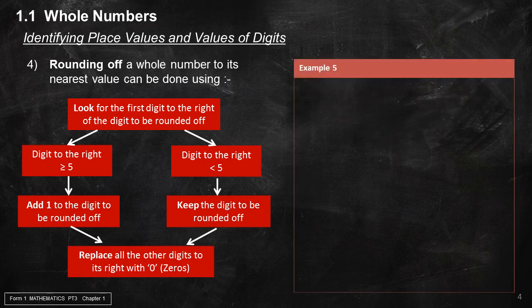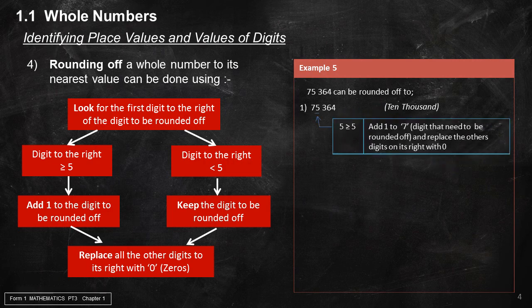Example 5 — rounding 75,364. To round to the nearest 10,000: the place value of 10,000 is digit 7. The digit to the right of 7 is 5. Because 5 is equal to 5, we add 1 to digit 7, and replace all other digits to its right with 0. The answer is 80,000.